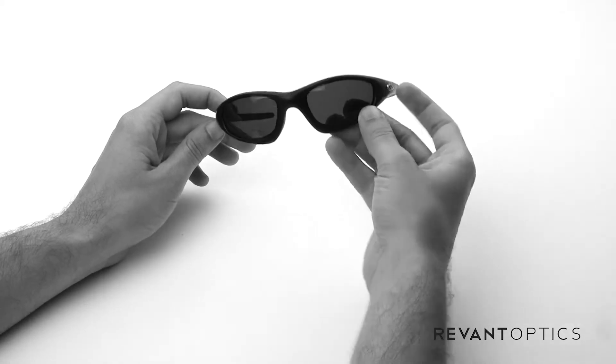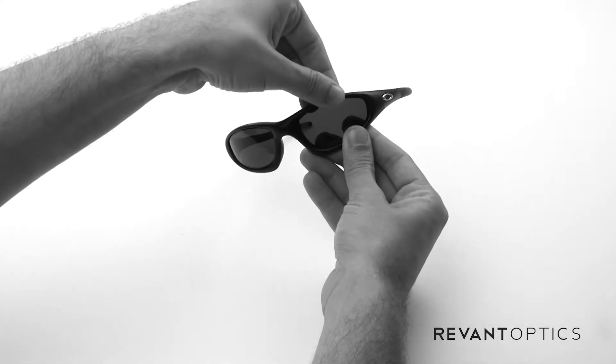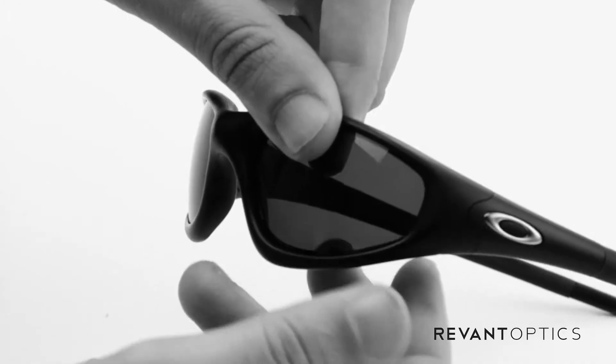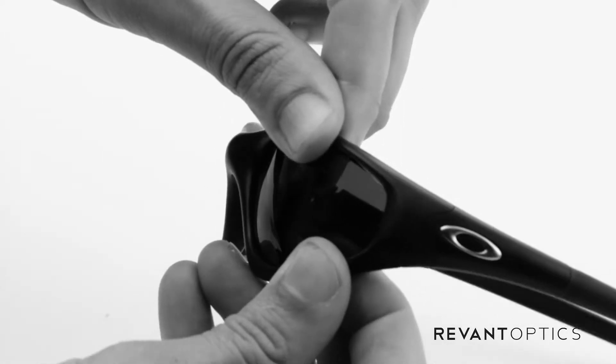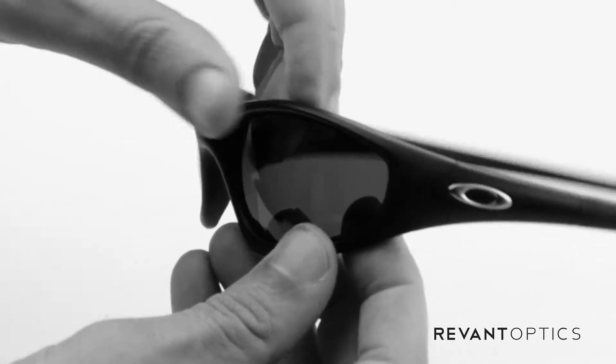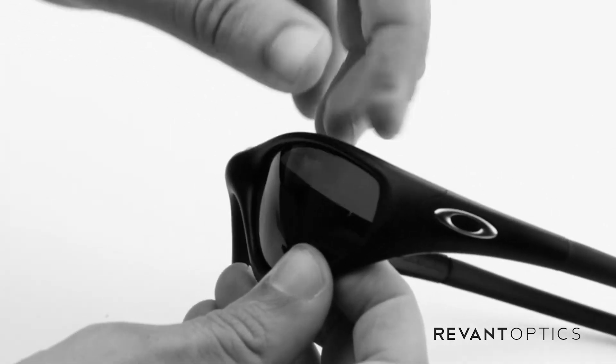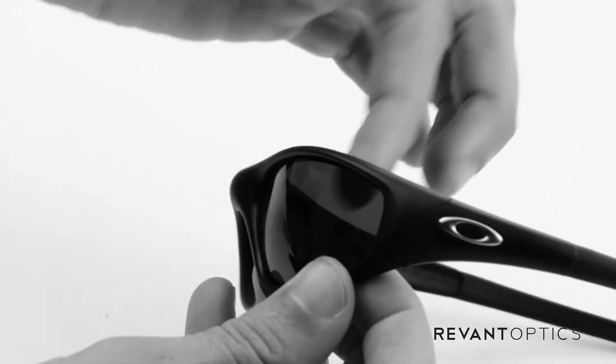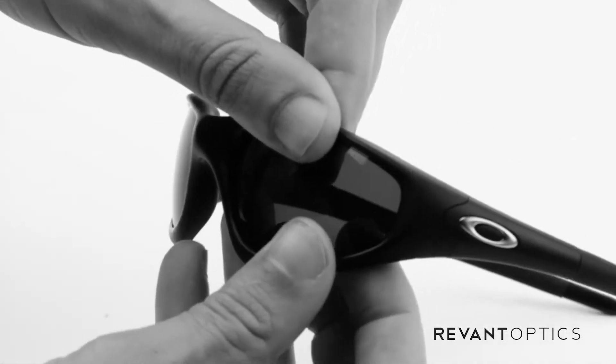To replace your lenses, you're going to remove them by pulling up on the top edge of the frame and pulling down on the bottom edge. They flex a little bit. If you have an older frame, which most of these are, you're going to want to be careful with them, but you can flex them a little bit and then push out on the back side of the lens to pop it out.